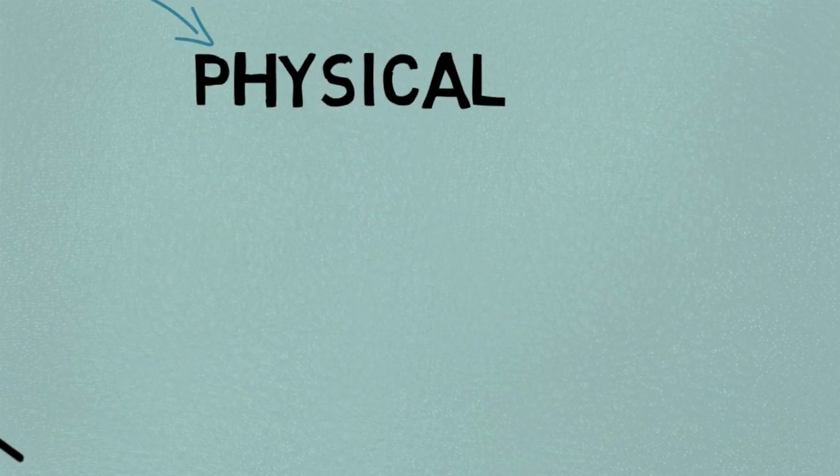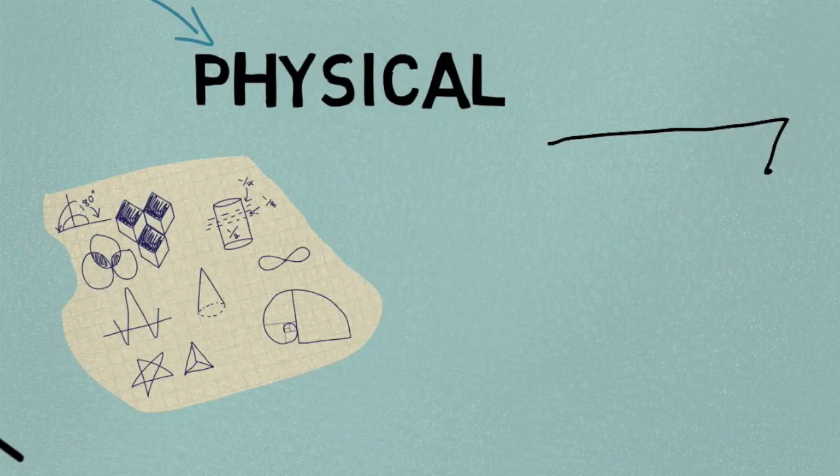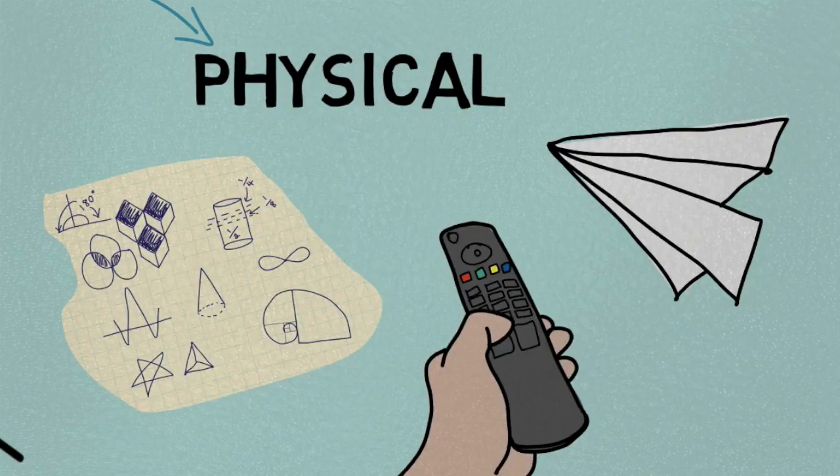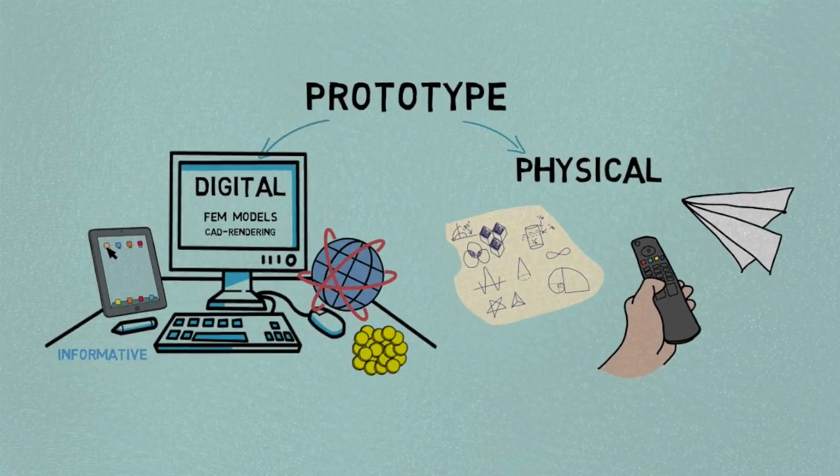Physical prototypes are sketches, paper prototypes and 3D prints. The stakeholder you show your product to can experience the product by touching it. But you don't have to create the prototype completely on your own. You can rely on reference systems.